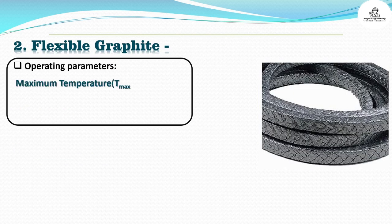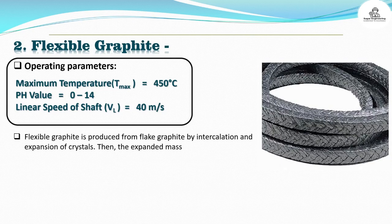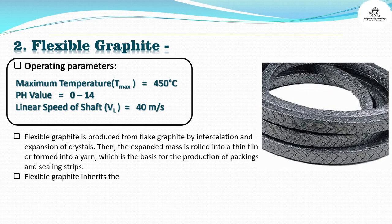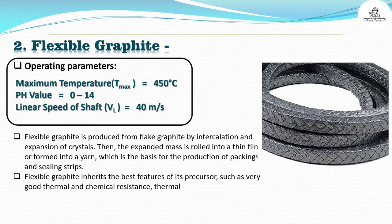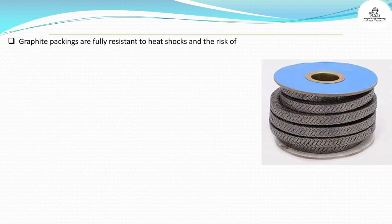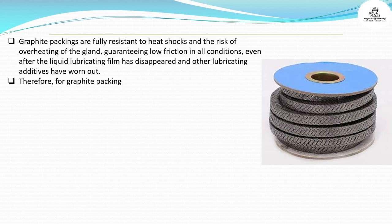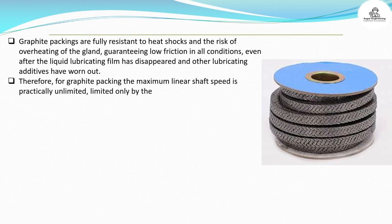2. Flexible graphite. Operating parameters: Maximum temperature (TMX) is equal to 450 degrees Celsius. pH value is equal to 0 to 14. Linear speed of shaft (VL) is equal to 40 meters per second. Flexible graphite is produced from flake graphite by intercalation and expansion of crystals. The expanded mass is then rolled into a thin film or formed into a yarn, which is the basis for the production of packings and sealing strips. Flexible graphite inherits very good thermal and chemical resistance, thermal conductivity and self-lubricating properties, as well as gaining softness and flexibility, making it a predestined material for use as a sealing material. Graphite packings are fully resistant to heat shocks and the risk of overheating of the gland, guaranteeing low friction in all conditions, even after the liquid lubricating film has disappeared. Therefore, for graphite packing, the maximum linear shaft speed is practically unlimited, limited only by the pump design.